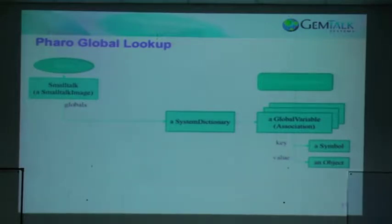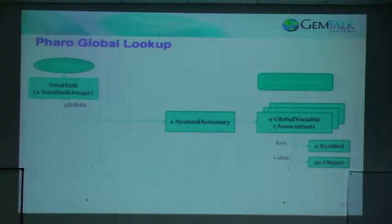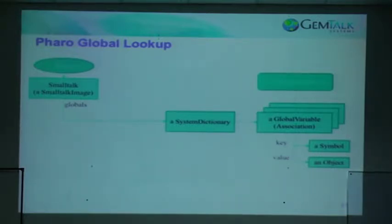To understand how we implement this, let's first look at traditional global name lookup. In traditional name lookup for a Smalltalk that does not support namespaces, you have your image, a system dictionary, and the system dictionary references a series of associations with key-value pairs. If you want to look up something, you start with the system dictionary and go from there.